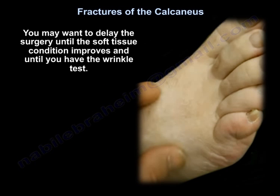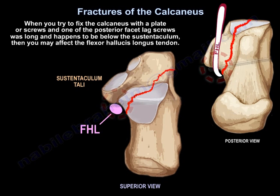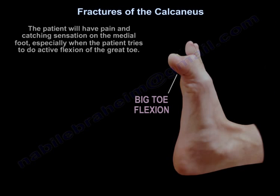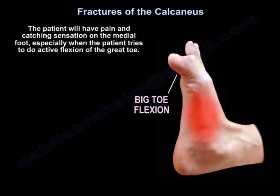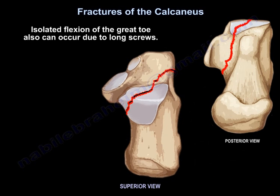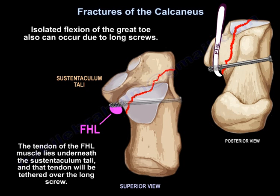You may want to delay surgery until the soft tissue condition improves and until you have the wrinkle test. When you try to fix the calcaneus with a plate or screws and one of the posterior facet lag screws is too long and positioned below the sustentaculum, you may affect the flexor hallucis longus tendon. The patient will have pain and a catching sensation on the medial foot, especially when attempting active flexion of the great toe. The tendon of the flexor hallucis longus muscle lies underneath the sustentaculum tali and will be tethered over the long screw.